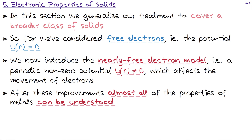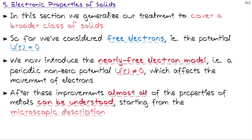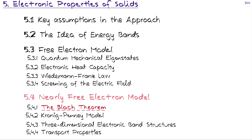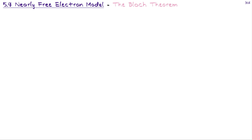After these improvements, basically almost all of the main properties of metals can at least be understood — maybe not calculated from first-principles approaches, but at least we can understand the main properties from the microscopic point of view, based on the microscopic description. This is what we will do in the upcoming four lectures. Let's now proceed to the actual main thing: the derivation and introduction of the Bloch theorem.